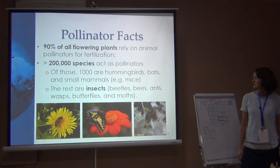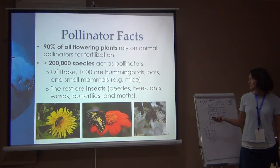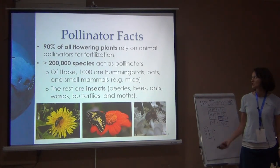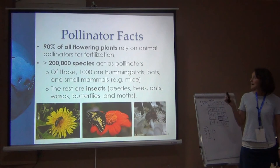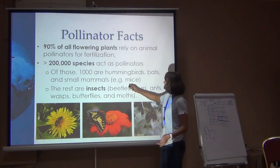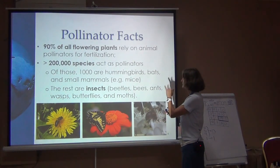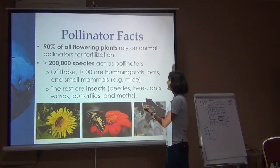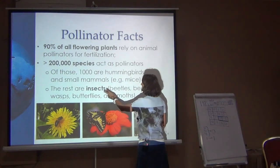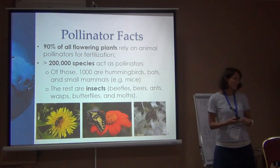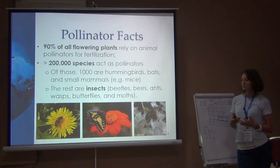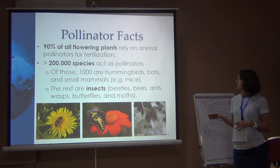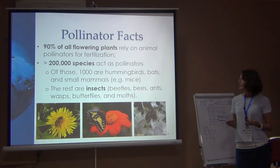Remember, it's an ecosystem service — an important one. 90% of flowering plants rely on animal pollinators for fertilization, and more than 200 species act as pollinators. You can have hummingbirds, bats, small mammals that pollinate these flowers, but the majority of pollination occurs by insects: beetles, bees, ants, butterflies, moths, wasps, and flies.